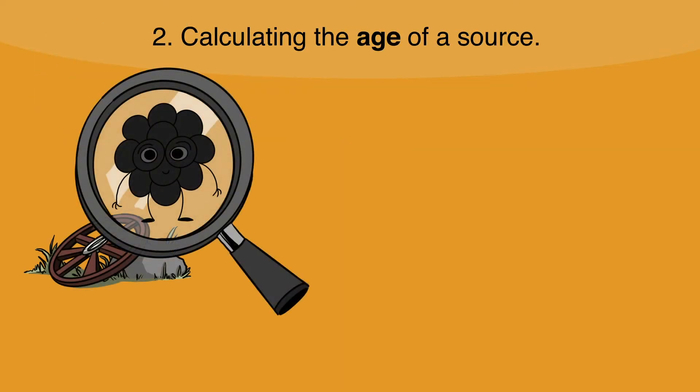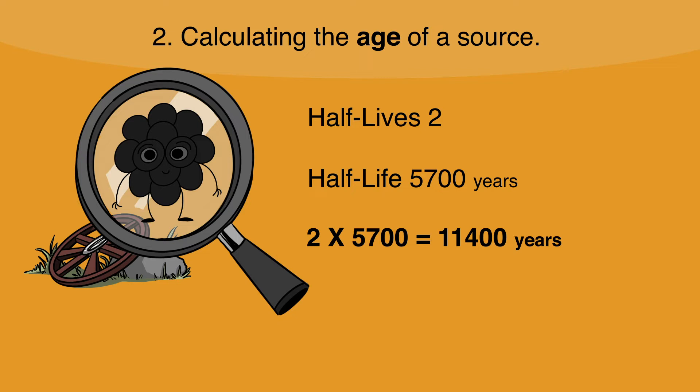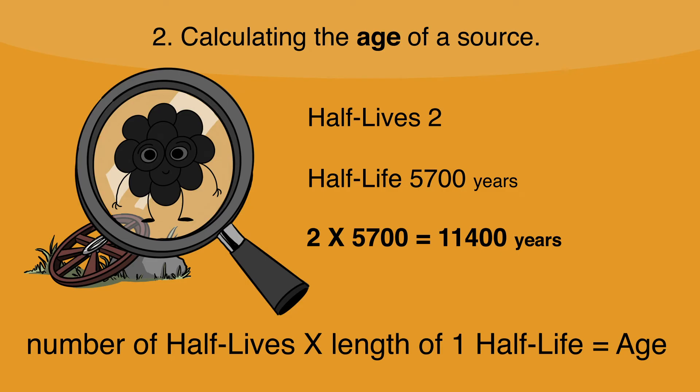Now we know that the half-life of carbon-14 is 5,700 years. So if it's two half-lives old, it must be two times 5,700, which is 11,400 years old. And that's it. That is radioactive dating.